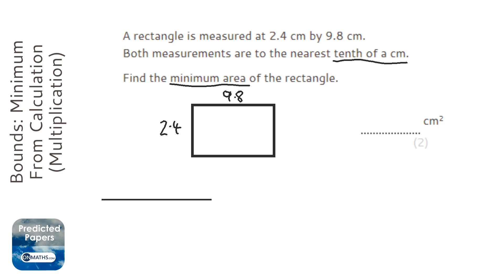And the way of doing bounds is draw a straight line, and we're going to do 2.4 to start with, so we're going to put 2.4 in the middle, find the next one down it could have been, well that's 2.3, and the next one up it could have been, 2.5.